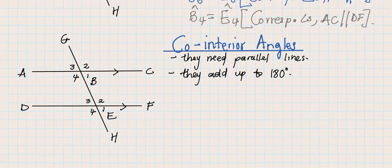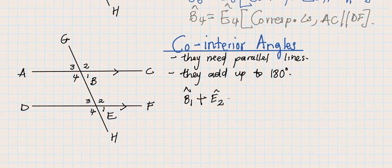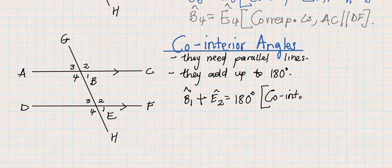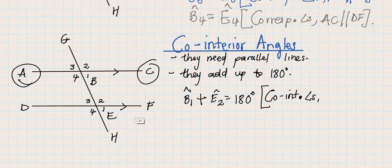Let's write that down. Angle B1 — it must have a cap on top to show that it's an angle — plus angle E2 must give us 180 degrees. Then you provide a reason. Remember, in geometry of straight lines you always give an answer with a reason. Our reason is: co-interior angles, and then label your parallel lines — the F-formation formed here.